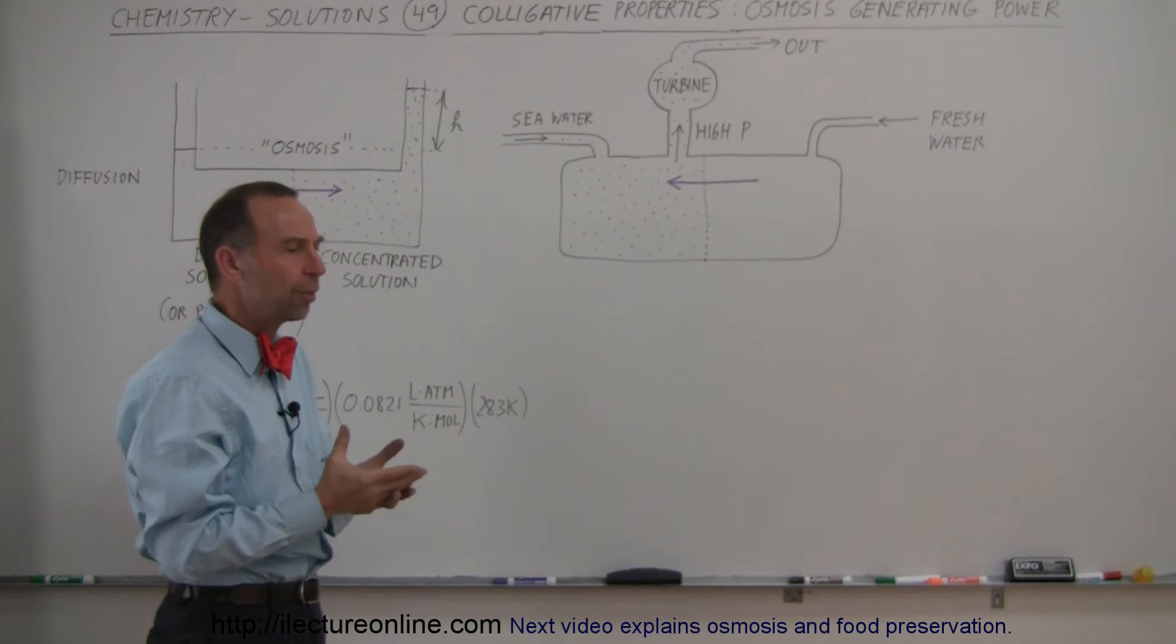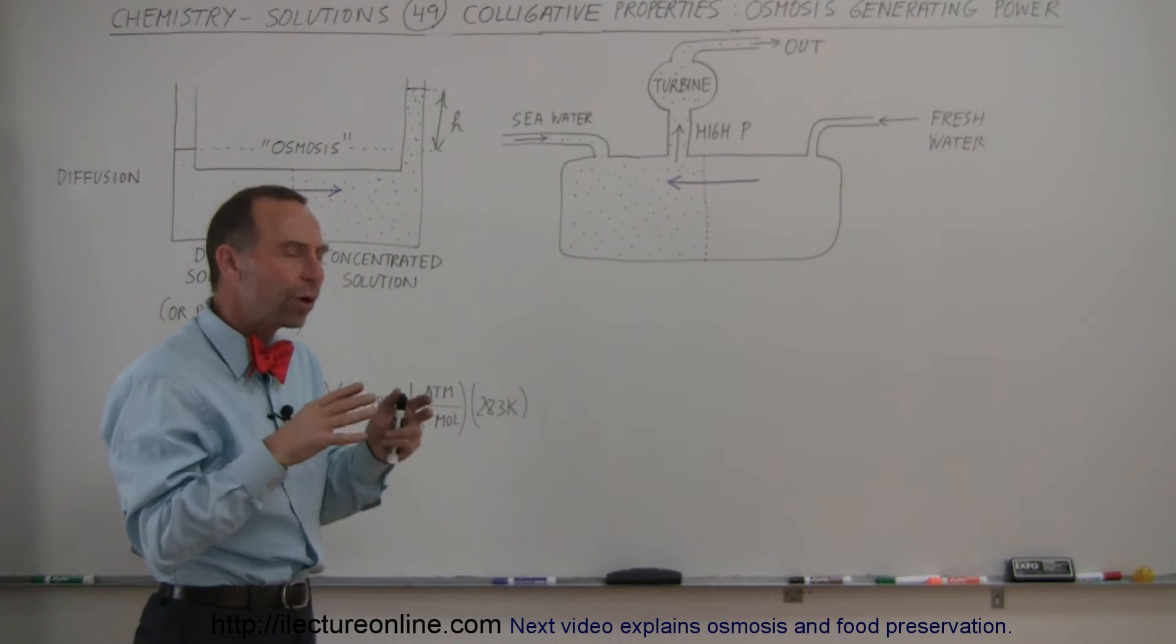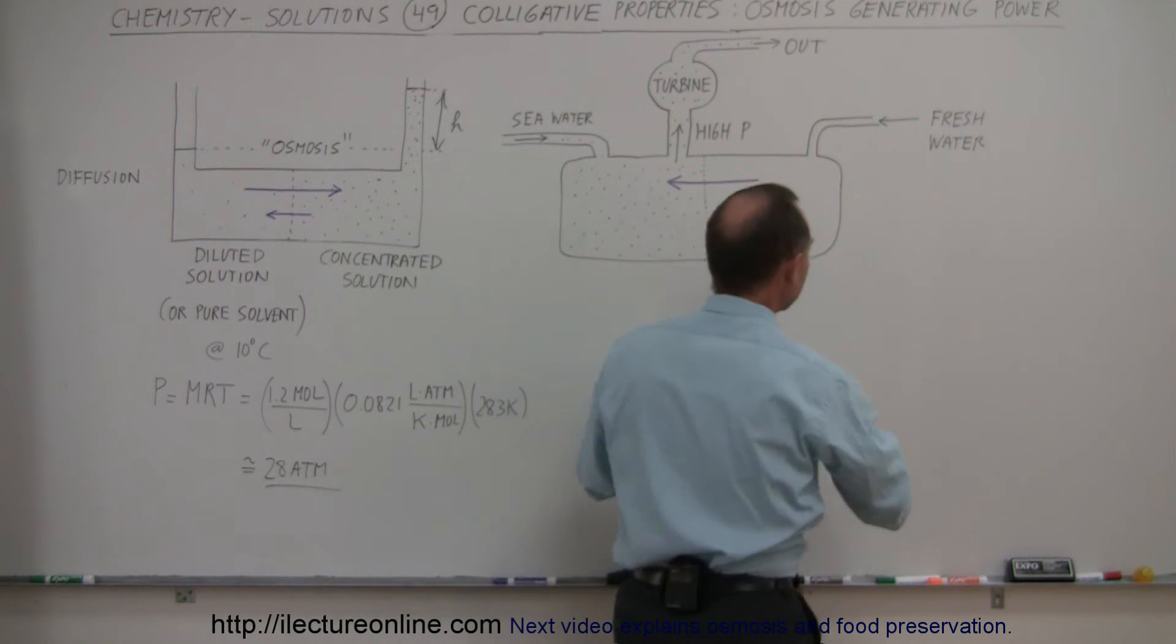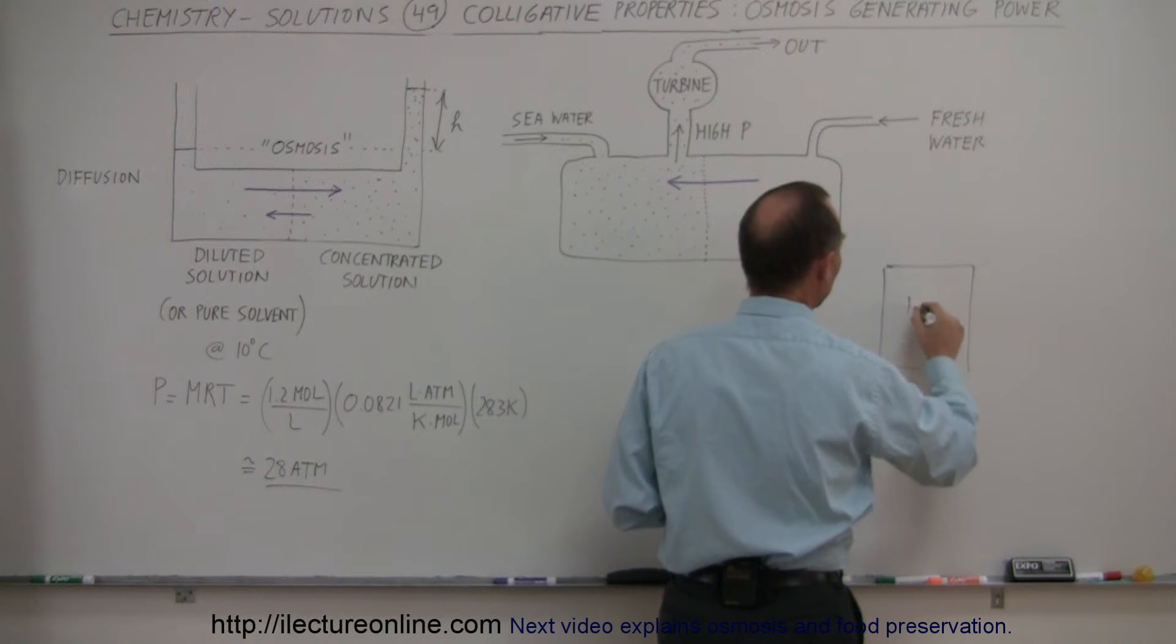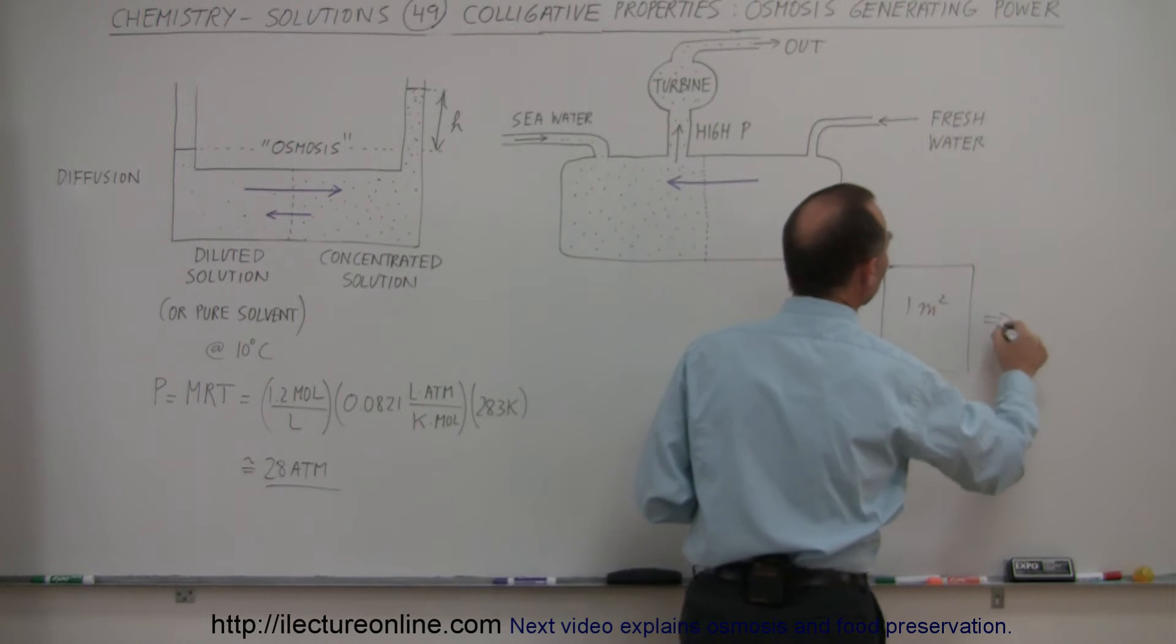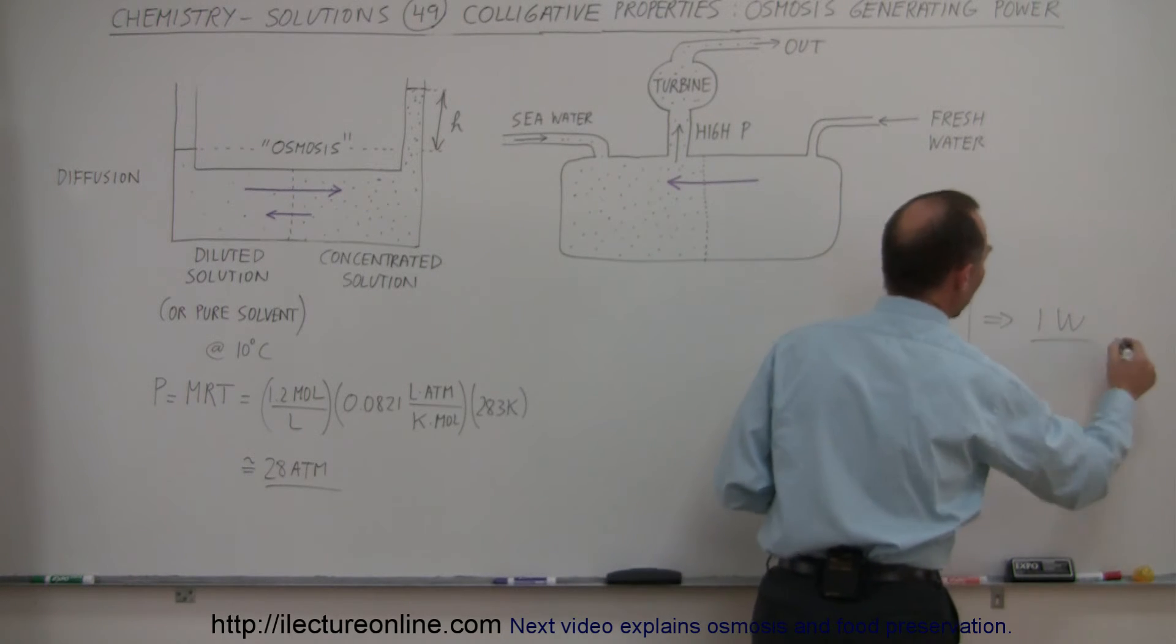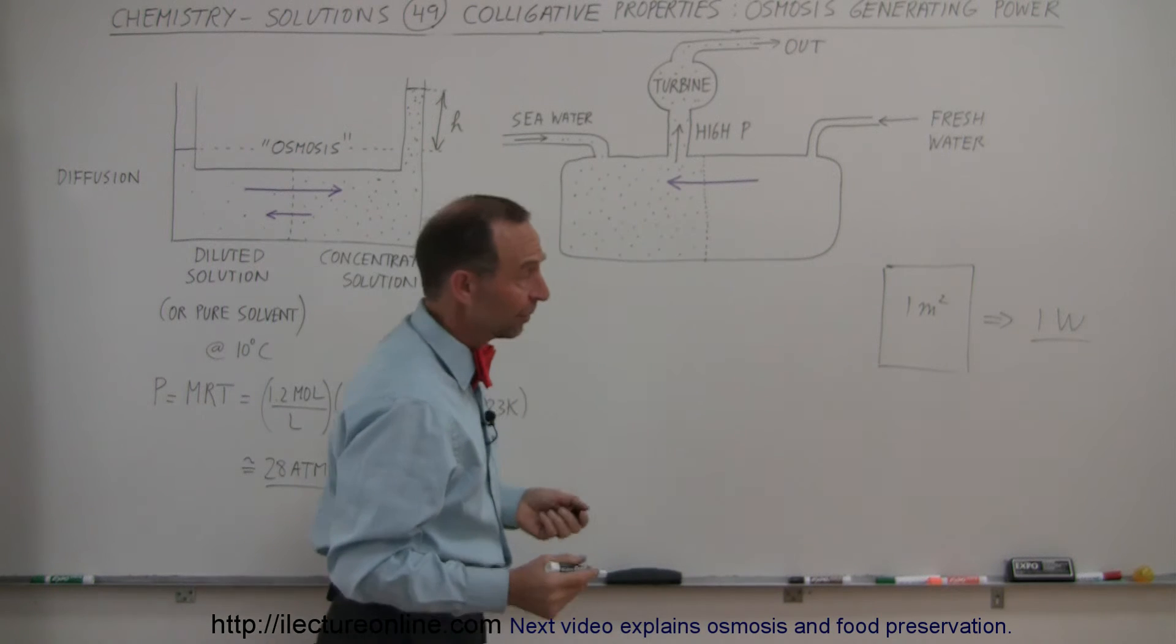You need an enormous amount of membrane and for about each square meter of membrane, if you think about it, that you push the water across—so if this is one meter squared—it generates about one watt of power. It's not a lot, it's something.